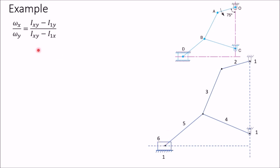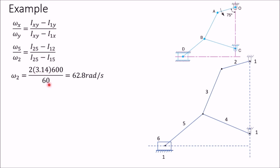From the angular velocity ratio theorem: ω_x divided by ω_y equals I_xy to I_1y divided by I_xy to I_1x. We need to determine the angular velocity of link 5, and we know the angular velocity of link 2. So substituting x = 5 and y = 2, the equation becomes ω_5 divided by ω_2 equals I_25 to I_12 divided by I_25 to I_15. Calculate ω₂: 2πn divided by 60 gives ω₂ = 62.8 radians per second.